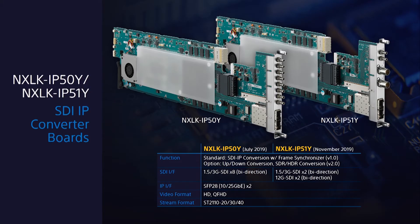The IP50Y provides 8x3G SDI ports and 2x25G ports for redundant network connection, while the IP51Y provides 2x12G SDI ports and 2x3G SDI ports. Both converters will offer optional up-down conversion and HDR-SDR conversion in a future upgrade.